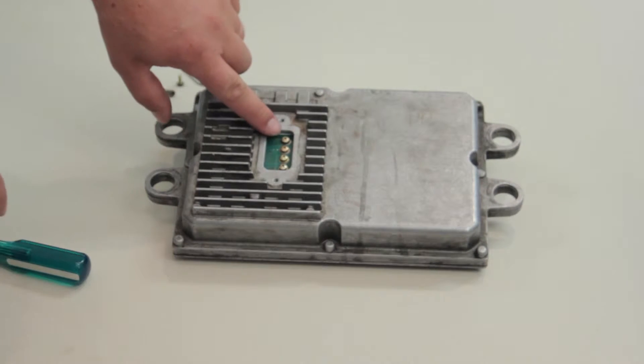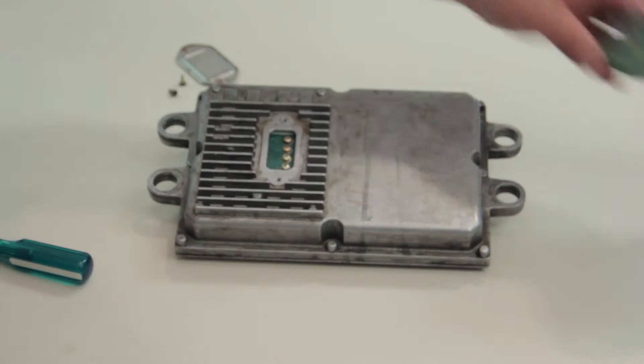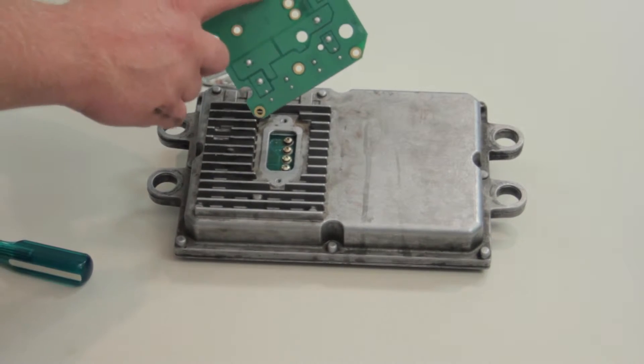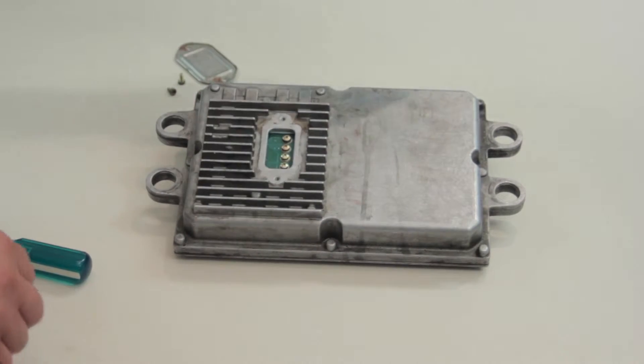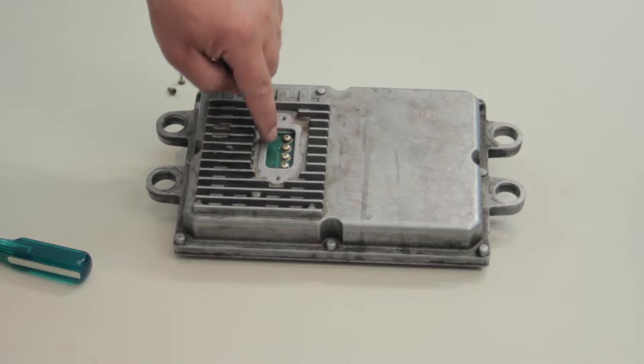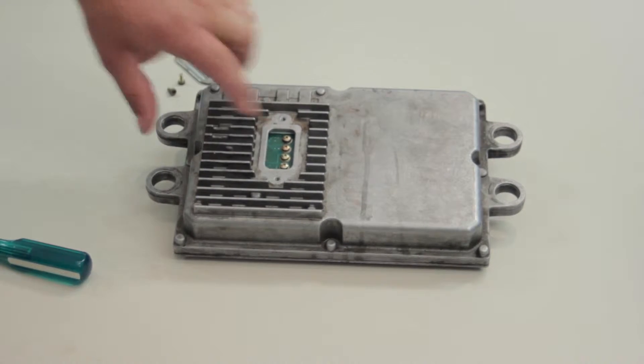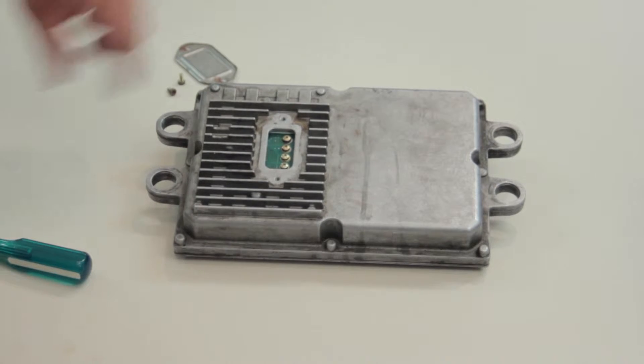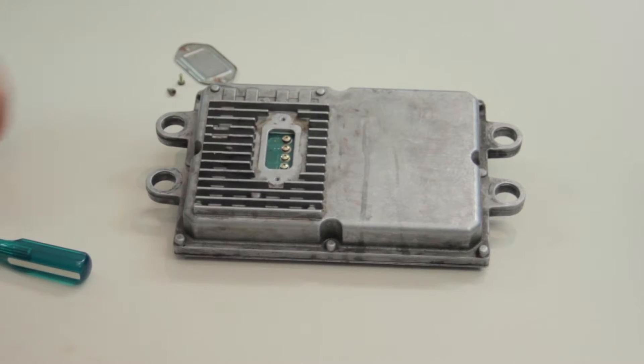Now inside here you'll see that there's four screws, that's a good sign. Our new FICM is designed for the four screw application. Now some of these will have seven screws in there and those are non-repairable FICMs. Those were used in a couple of early year applications so first thing we need to do is ensure that we have just the four different screws in here.